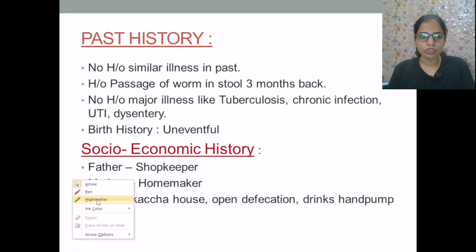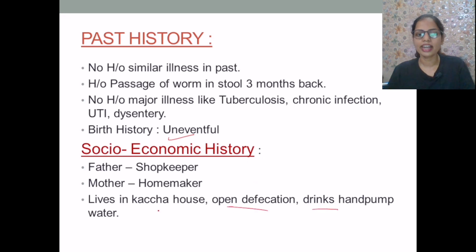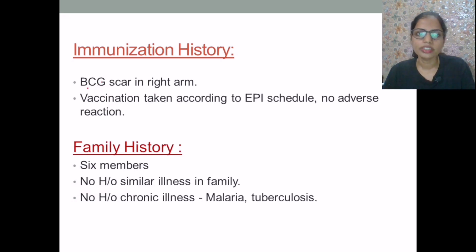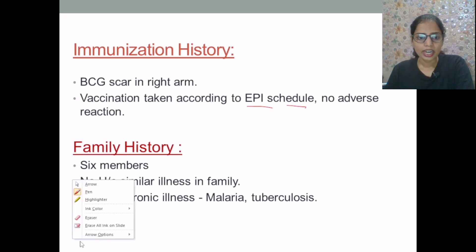There is no significant past history, and his birth events were completely uneventful. Socio-economic history shows the child was more prone to infections due to open defecation and drinking hand pump water. BCG scar is present in the right arm, which is the vaccination against tuberculosis given from birth up to one month. Vaccination was taken according to the Expanded Program on Immunization schedule. Family history showed no significant findings related to the case.